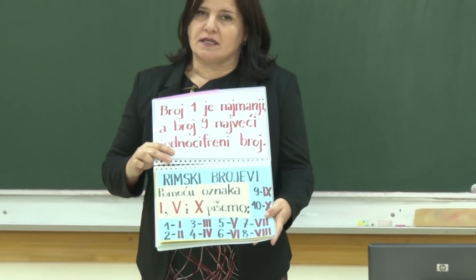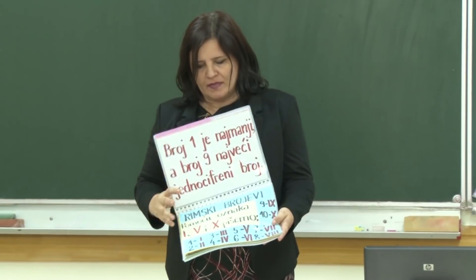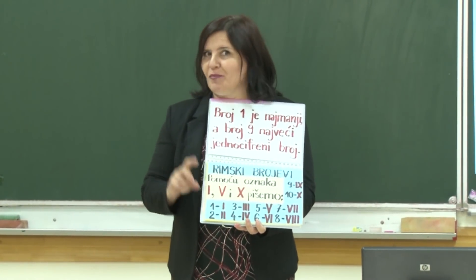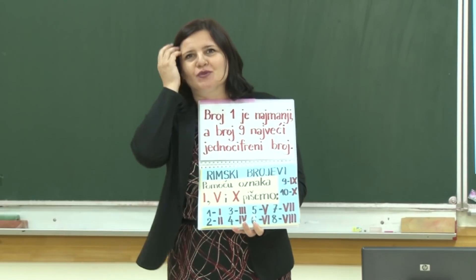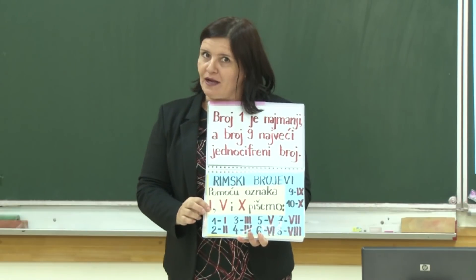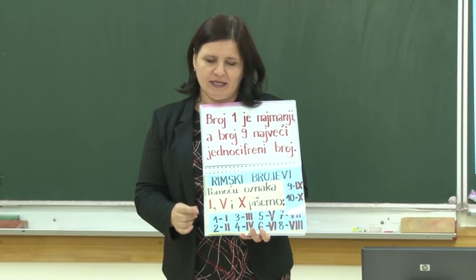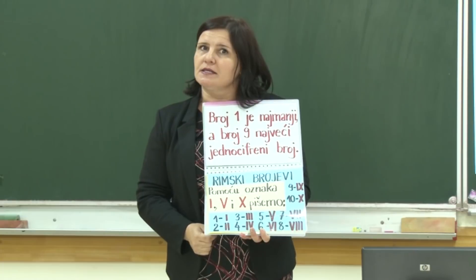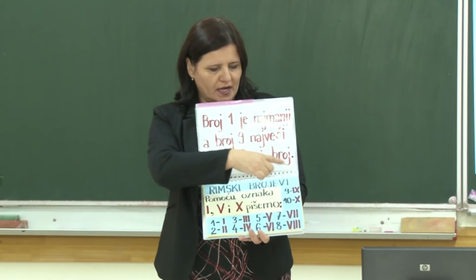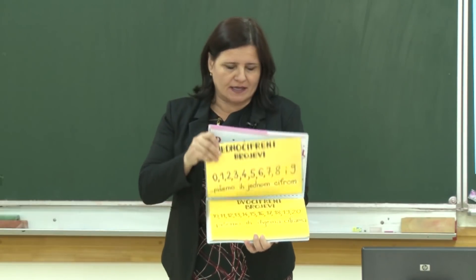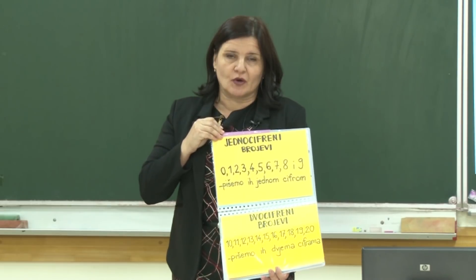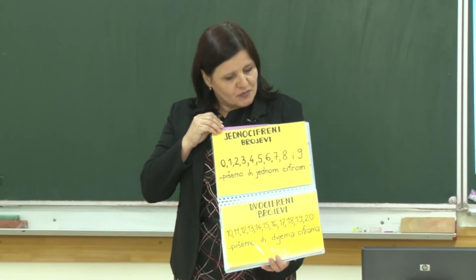Rekli smo da imamo još neke oznake — imamo neke rimske brojeve. S ovim oznakama: pravnom linijom koja počinje na slovo I, V i X — sa ovim oznakama pišemo rimske brojeve. Ako zapisujemo brojeve jednom cifrom, nazivamo ih jednocifreni brojevi.